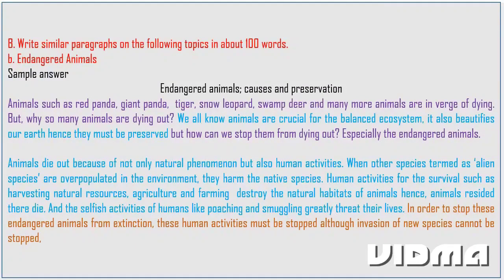When other species, termed as alien species, are overpopulated in the environment, they threaten the native species. Human activities for survival such as harvesting natural resources, agriculture, and farming destroy the natural habitats of animals. The selfish activities of humans like poaching and smuggling greatly threaten their lives. In order to stop these endangered animals from extinction, these human activities must be stopped. Although the invasion of new species cannot be stopped entirely, action must be taken to protect endangered animals.